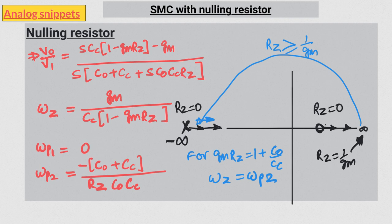In this video, we have seen how a nulling resistor can be used to solve the right-hand plane zero introduced by simple Miller compensation. But this is not the only method. In the next video, we will look at a couple more methods intuitively to solve this right-hand zero problem. Post your comments below and thanks for watching.